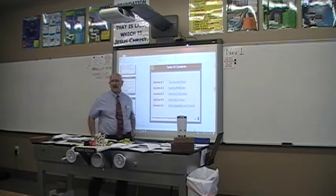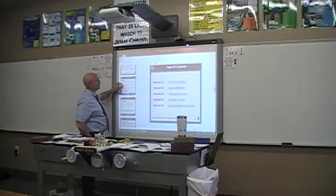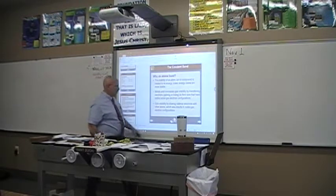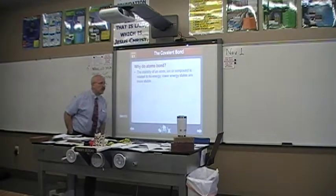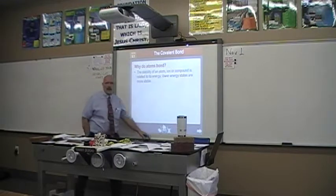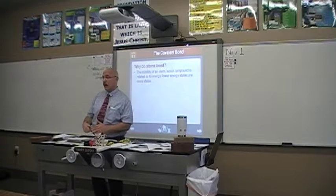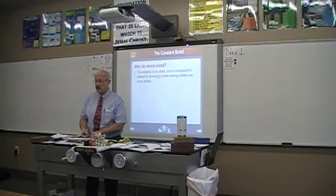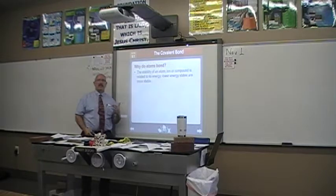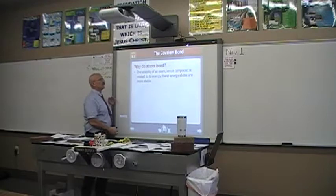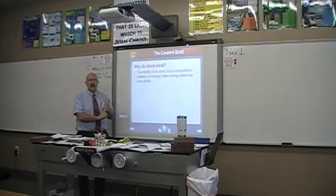Next week we'll have a lab that ties into this chapter about the shapes of molecules. First thing: why do chemical reactions take place? Chapter nine is where we actually start talking about chemical reactions. But first we've got to cover covalent bonds. We've covered ionic bonds in detail - how they happen, how they combine, how to name them.